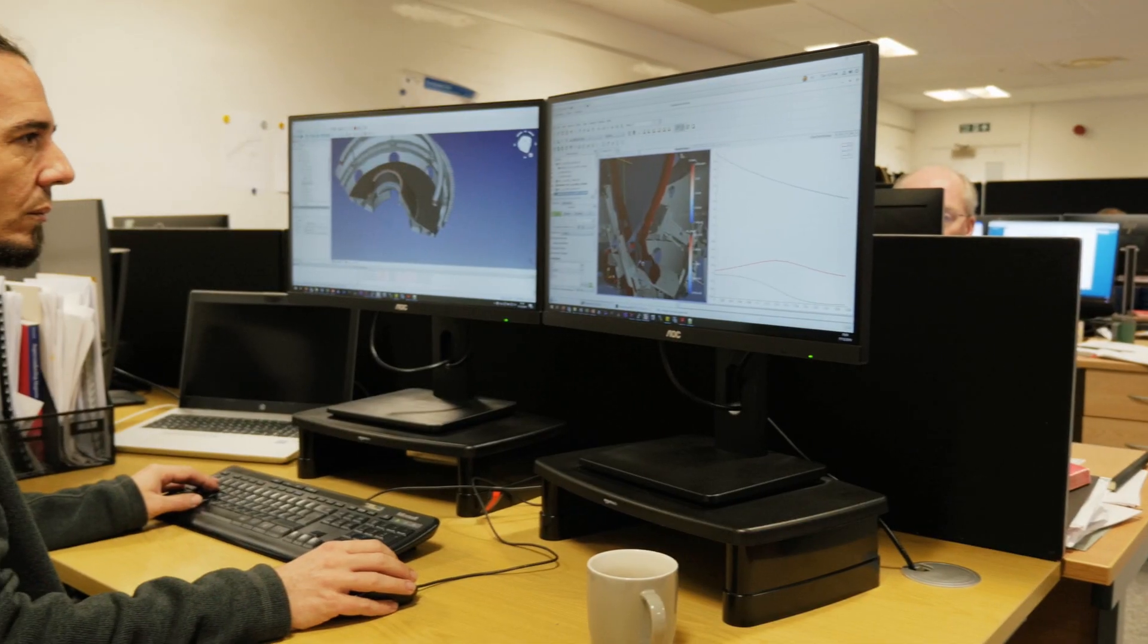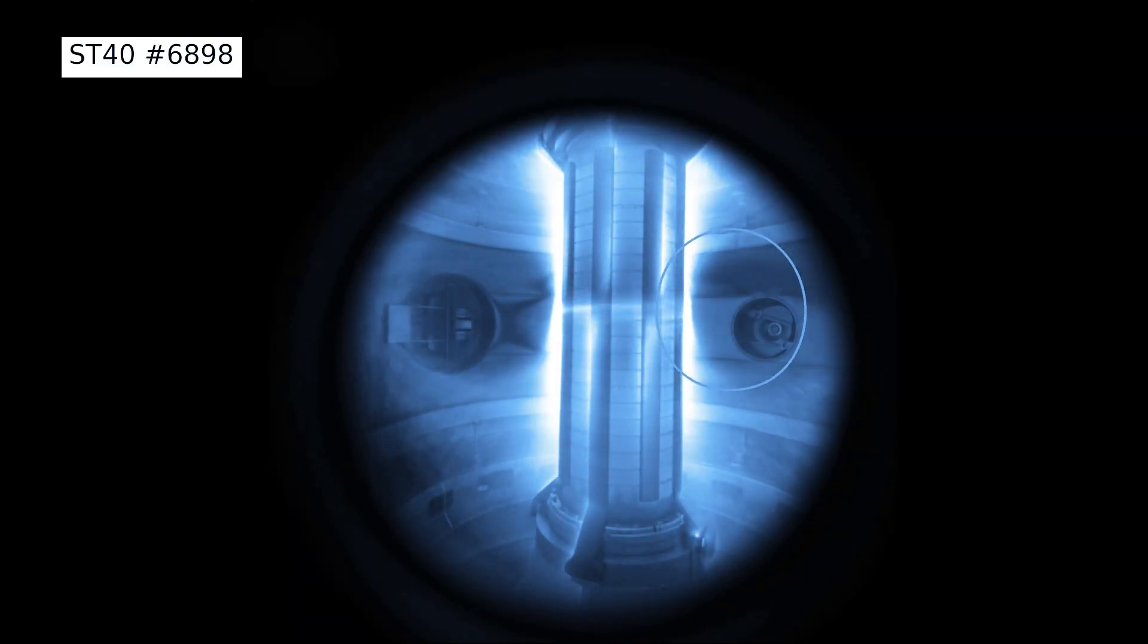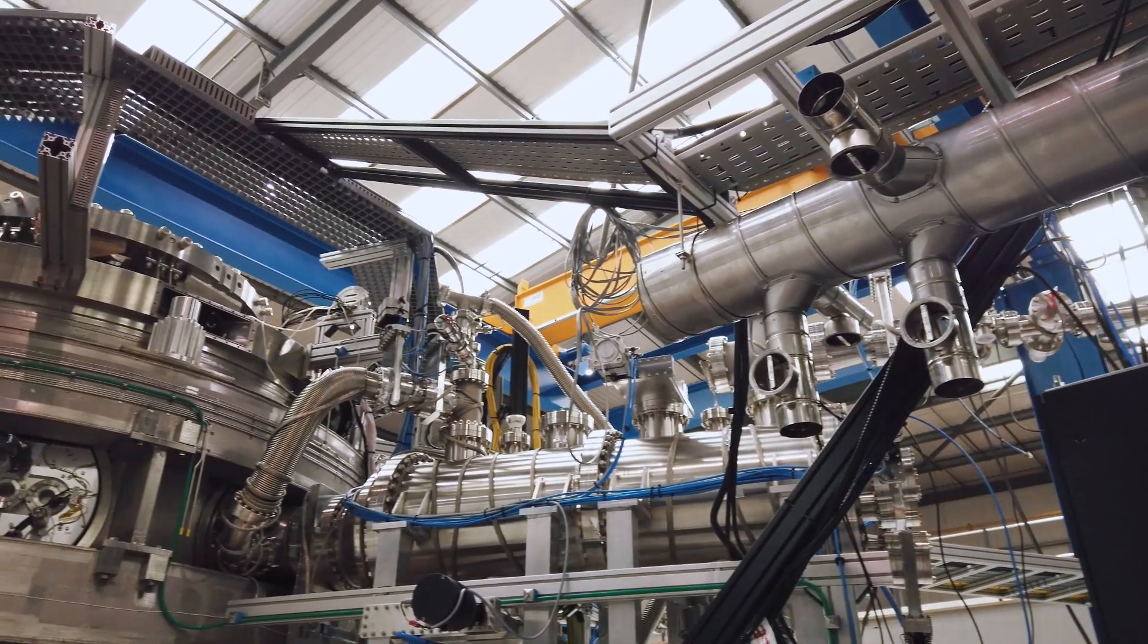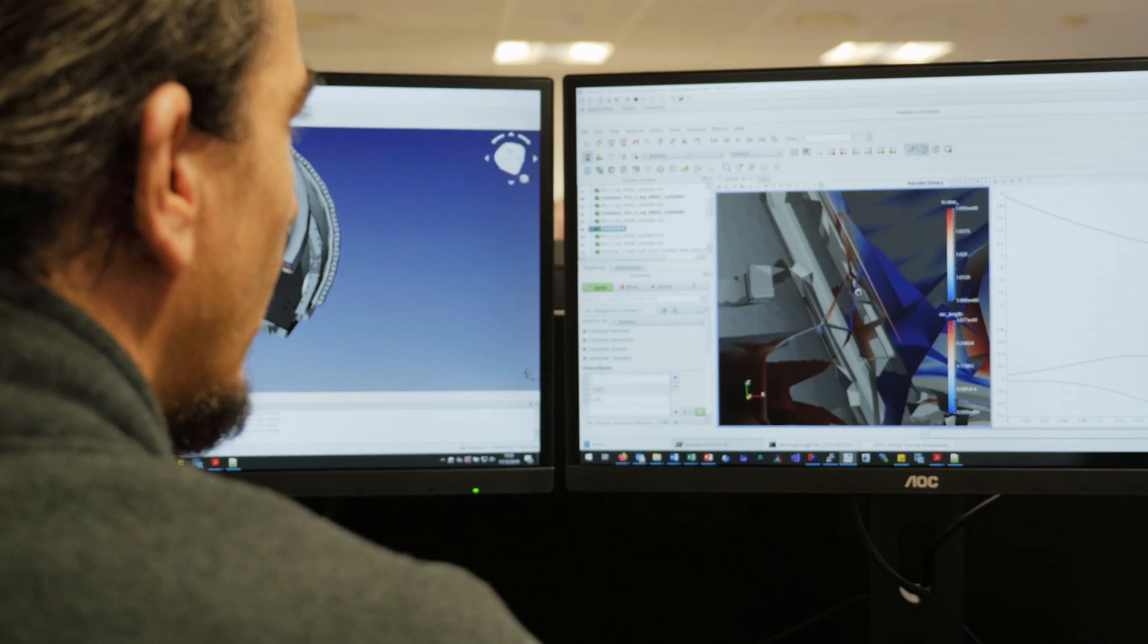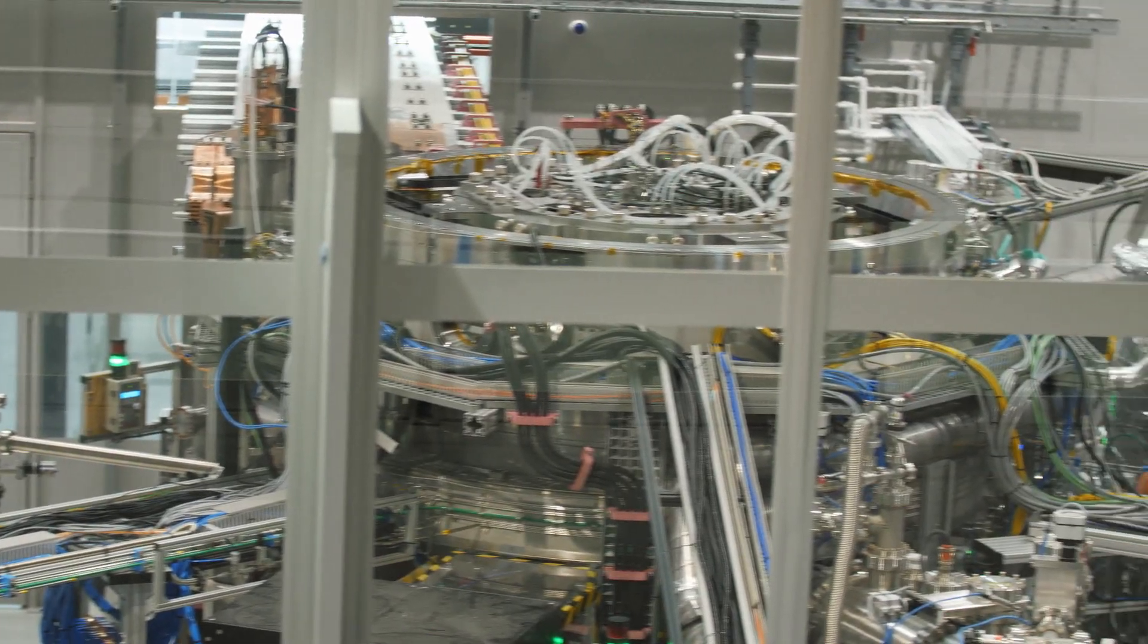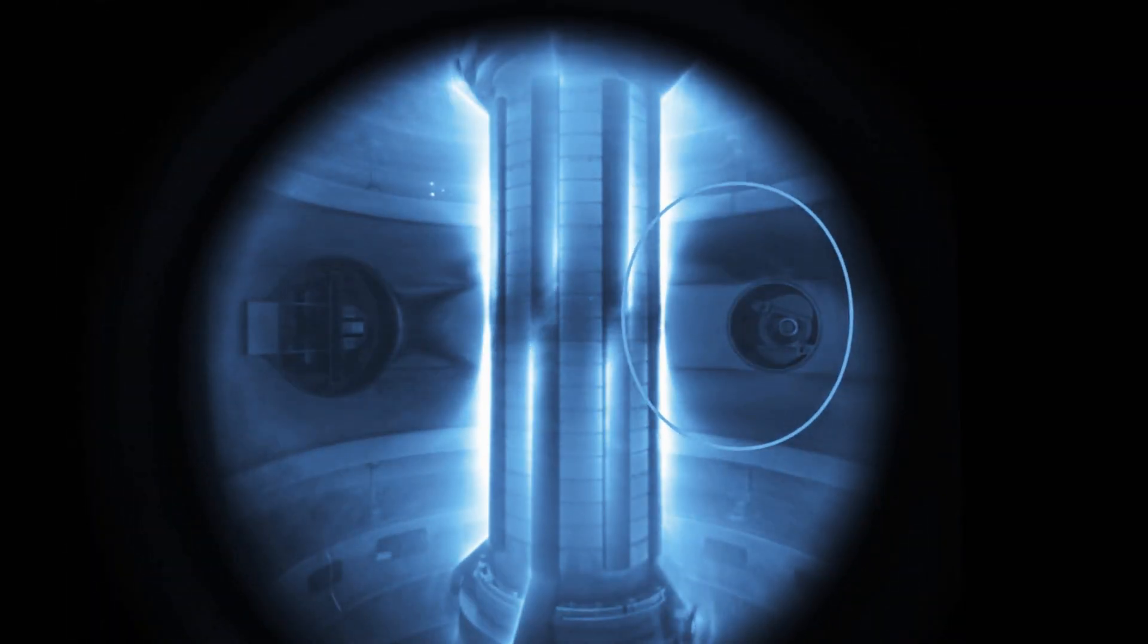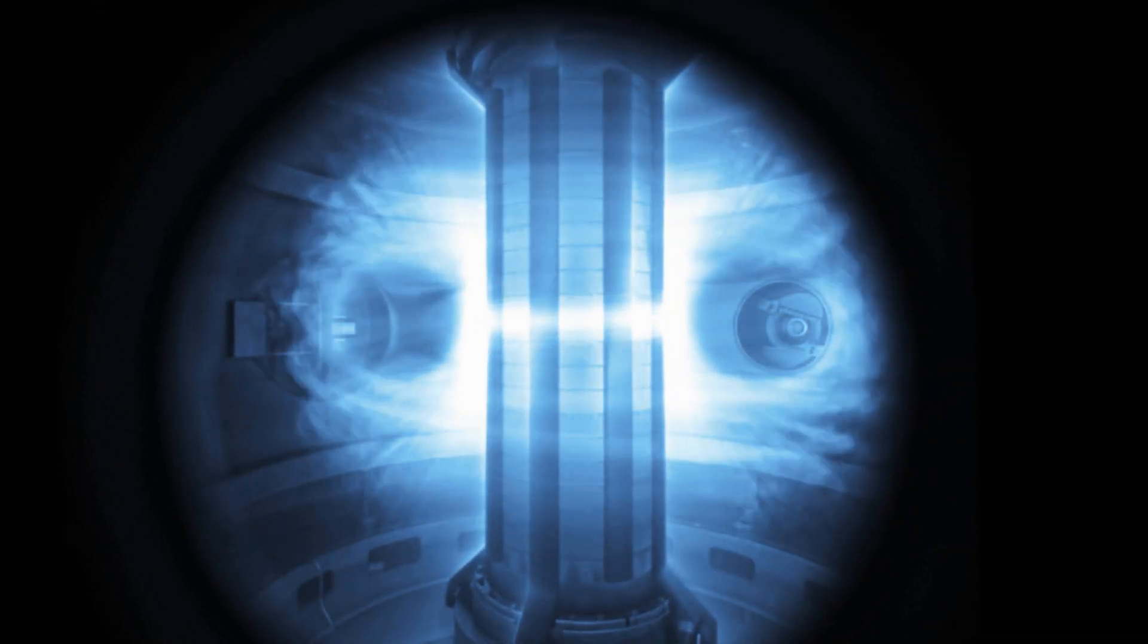People designing fusion devices need to be able to deal with high levels of heat. They do this by incorporating something called a diverter. We're designing and installing a diverter in ST40. So far it has been operated with circular plasmas in what's known as a limited configuration. A diverted configuration will allow us to reach higher performance.